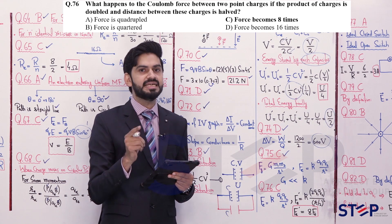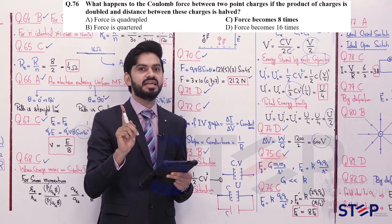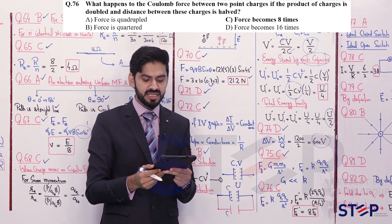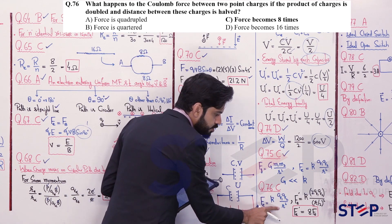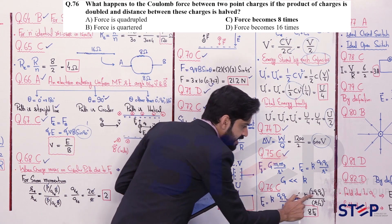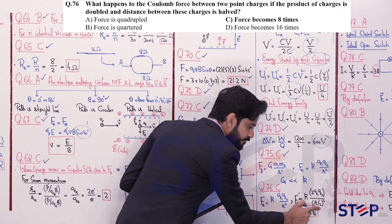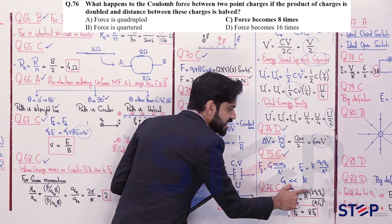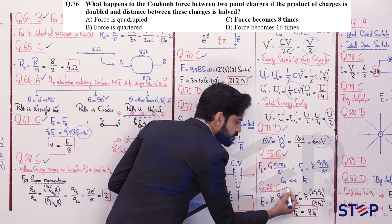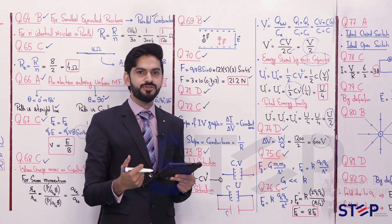Question 76: What happens to the Coulomb force if the product of charges Q1×Q2 is doubled and the distance is halved? F = KQ1Q2/R². With 2Q1Q2 in numerator and R/2 in denominator: F' = K(2Q1Q2)/(R/2)² = K(2Q1Q2)/(R²/4) = 8KQ1Q2/R² = 8F. The force becomes 8 times the initial force. Answer is option C.